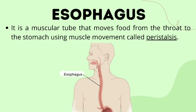After passing through the pharynx, food passes through a long tube called the esophagus. It moves food from the throat to the stomach using a muscle movement called peristalsis. Even if a person is upside down, they won't immediately vomit the food, because the esophagus has a wave-like contraction called peristalsis whose direction is always downward.